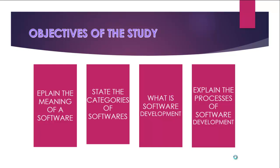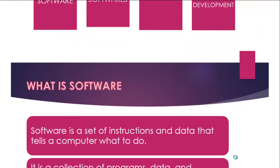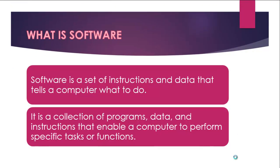We hit the ground running by looking at the first objective: what is software? A computer system comprises both software and hardware. Software is that part of the computer that you can see running but cannot touch physically, while hardware is that part of the computer that you can touch.